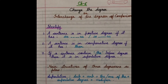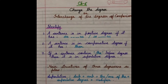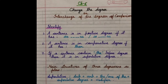As you know, dear students, there are three types of degree: positive degree, comparative degree, and superlative degree. In positive degree, we simply tell about the quality of a noun. In comparative degree, we compare two things or two persons. In superlative degree, one person or thing is compared to many others, and this is the highest degree of comparison.